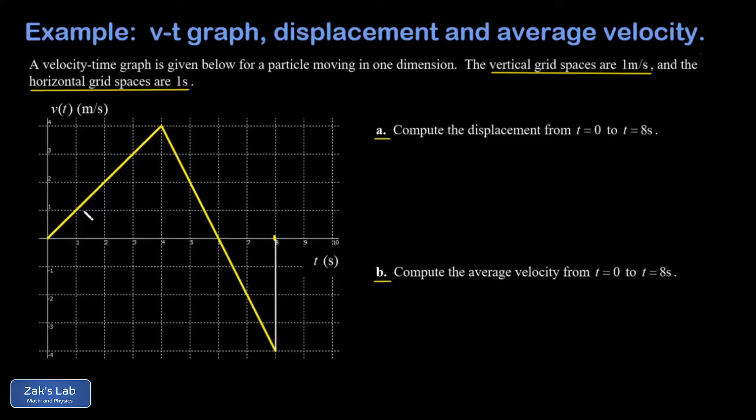I have one triangle that counts as positive area - the object was moving in the positive direction so I get positive displacement there - and then one triangle that counts as negative area. The object was moving in the negative direction so I get negative displacement there. I'll call the first one delta x1 and the second one delta x2.